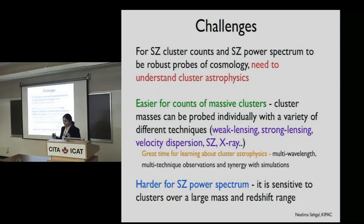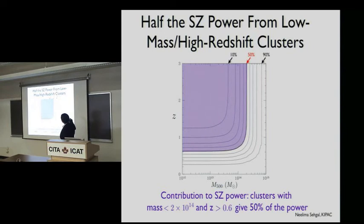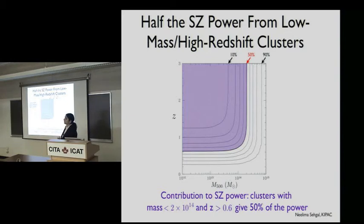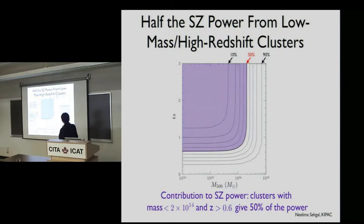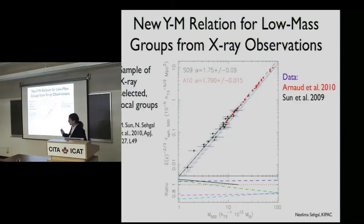I want to mention that the SZ power spectrum is harder to extract cosmology from, in my opinion, because it's much more sensitive to a wide range of cluster masses and redshifts where we know the astrophysics less well. At least 50% of the SZ power spectrum comes from lower-mass clusters at higher redshifts. We know very little about clusters in this regime — we haven't probed them in X-ray and optical before. The fiducial model was calibrated off of massive clusters at low redshift, so extrapolating down to low mass and high redshift may not be correct.